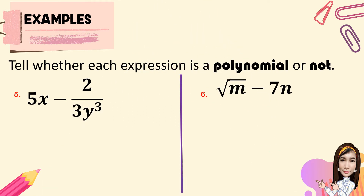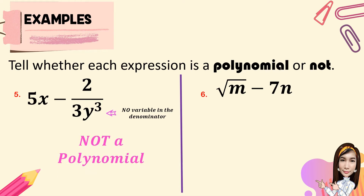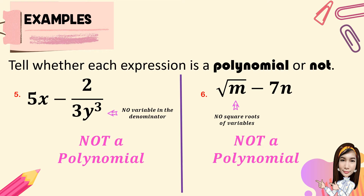For number 5, we have 5x minus 2 over 3y cubed. One of the restrictions is there must be no variable in the denominator, so this expression is not a polynomial. For number 6, square root of m minus 7n — there must be no square roots of variables, therefore this expression is not a polynomial.